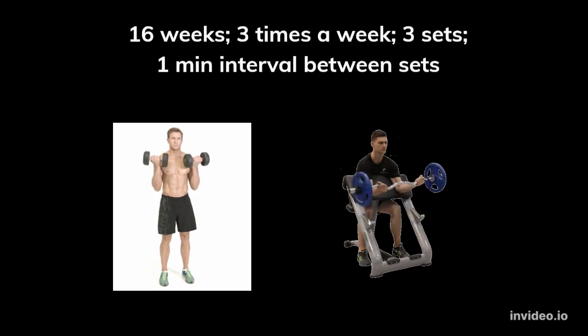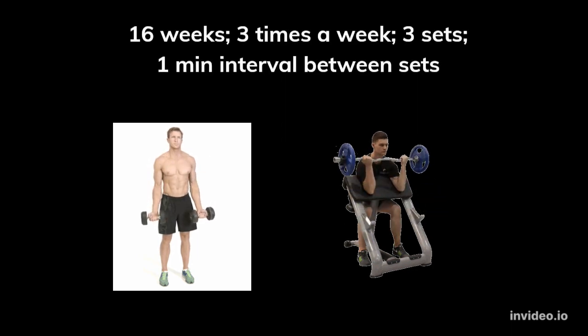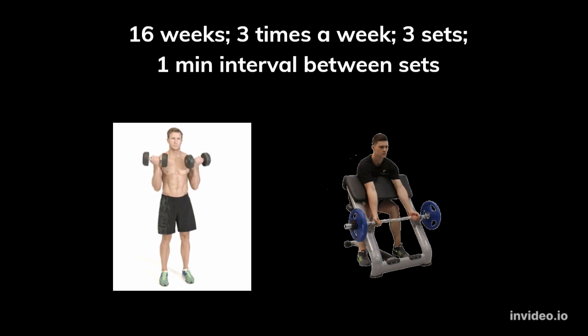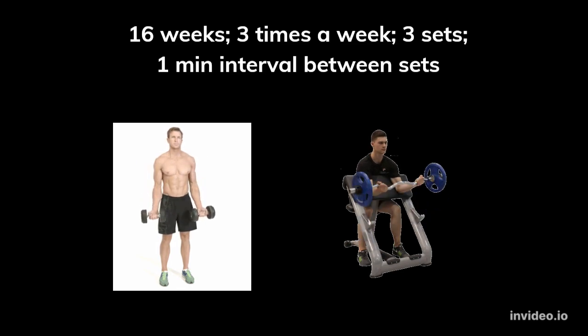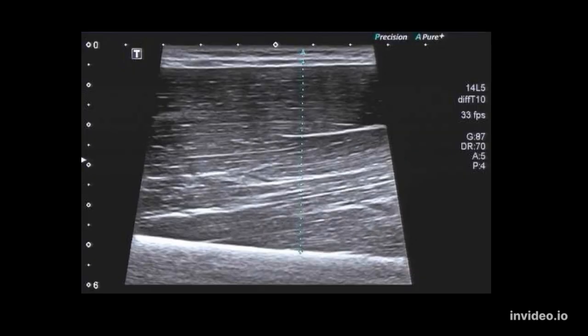The resistance training program consisted of completing three sets each of biceps and scott curls, performed to volitional fatigue three days a week. Biceps thickness was measured using ultrasound images, B mode, before and after the 16 weeks of training.